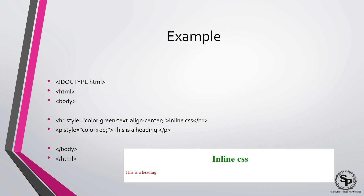Consider an example. We start with DOCTYPE HTML, then the HTML tag, then the body. Inside the body, an H1 tag uses the style attribute with CSS properties: color green and text-align center. A paragraph tag uses style with color red. The inline CSS heading is displayed in green text color, and the paragraph color is displayed in red.